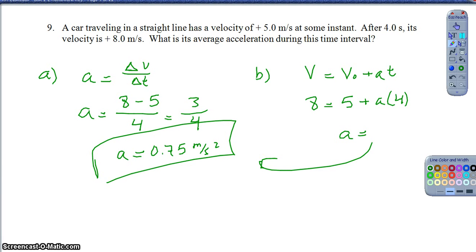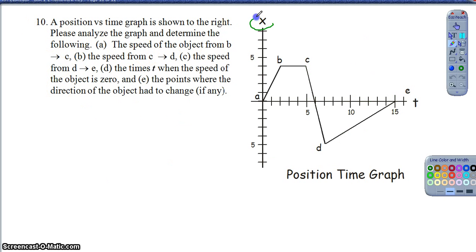Okay, so question 10 gives us another, and again, the first thing I always look for, it is a position versus time graph. We will see more velocity versus time graphs moving forward, but make sure you're paying attention to the key differences between the two. So anyway, they give us a whole bunch of information to find.